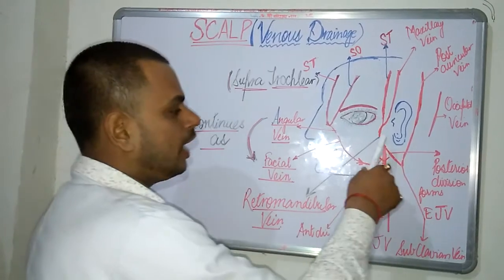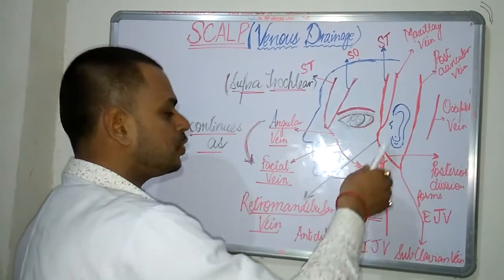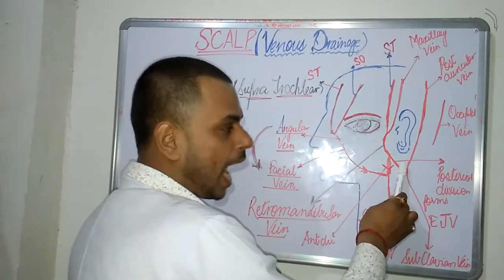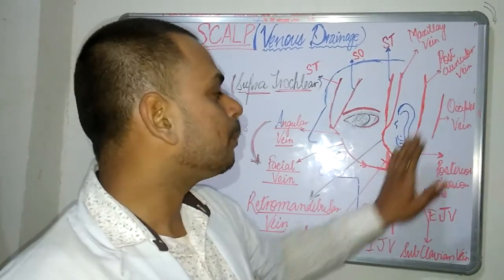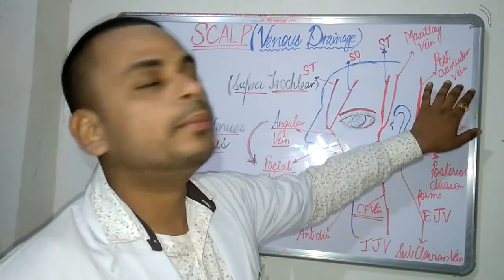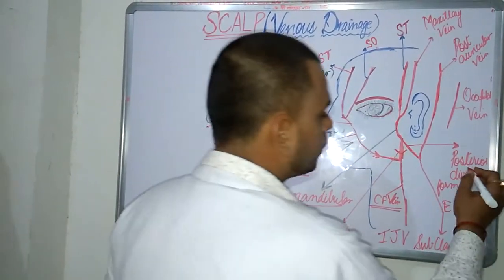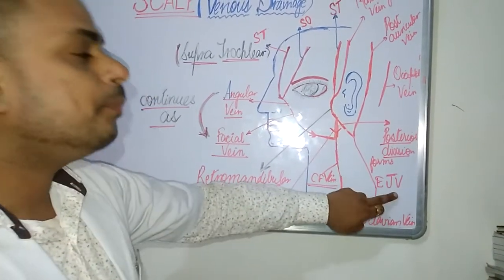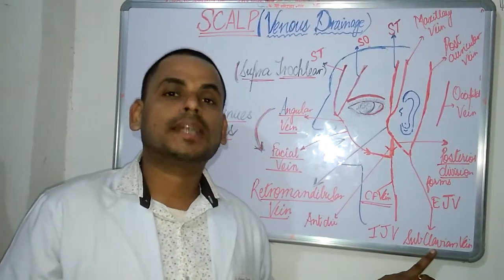Moving on to the posterior division: the superficial temporal and the maxillary vein join to form the retromandibular vein, which splits into the anterior and posterior divisions. The posterior division of the retromandibular vein joins with the posterior auricular vein to form the external jugular vein, which further drains into the subclavian vein.